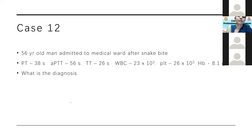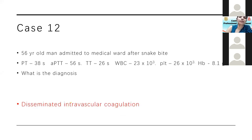Case 11: A 56-year-old man admitted after a snake bite with prolonged PT, APTT, and thrombin time, marginally raised white cells, low platelets, and mildly low haemoglobin. This picture is consistent with consumptive coagulopathy — disseminated intravascular coagulation (DIC) — causing factor deficiencies, fibrinogen deficiency, and thrombocytopenia.